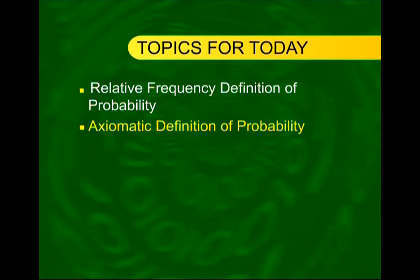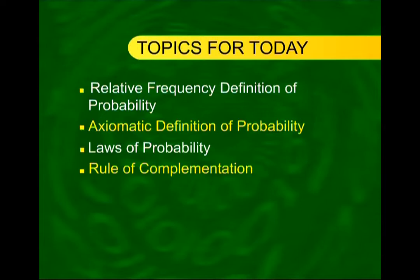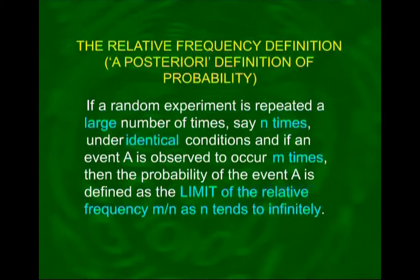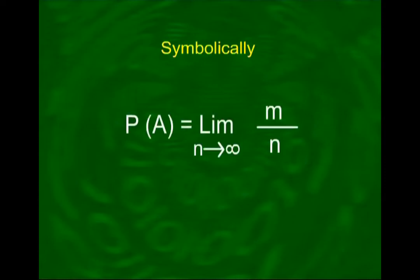The axiomatic definition of probability will also be covered today. As indicated in the last lecture, the relative frequency definition pertains to those situations where a particular experiment has been repeated a large number of times. If a random experiment is repeated a large number of times — say n times — under identical conditions, and if an event A is observed to occur m times, then the probability of event A is defined as the limit of the relative frequency m over n as n tends to infinity. Symbolically, P(A) = lim(m/n) as n → ∞.